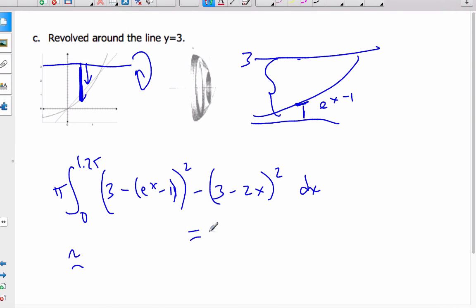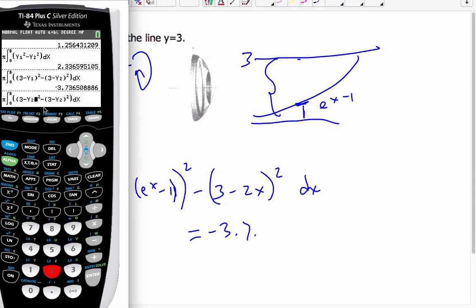I should get something that doesn't make sense to me. Let's see, minus 3.7. Oh, I found my mistake. I put these functions in backwards. This should be y2. And this should be y1.